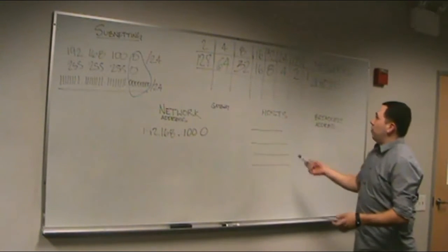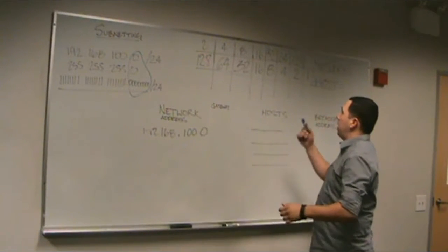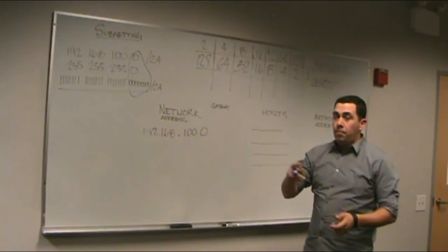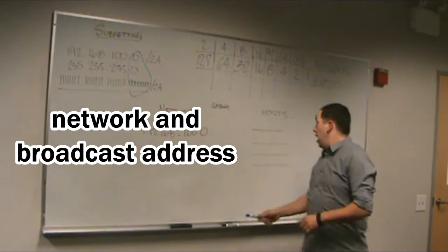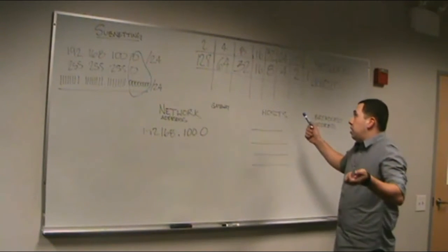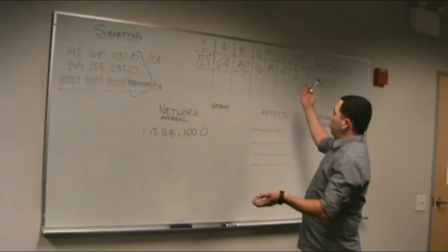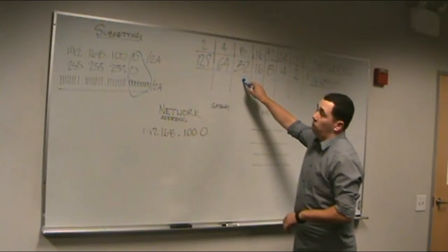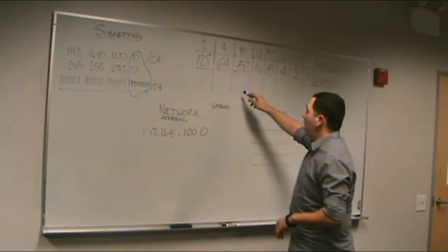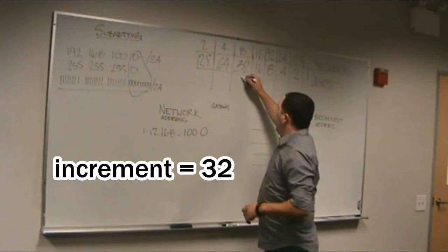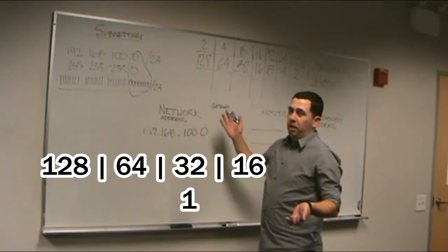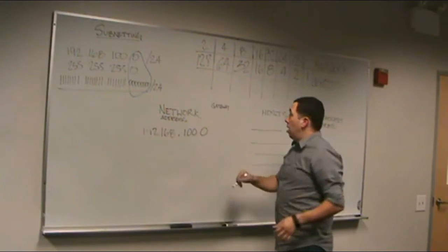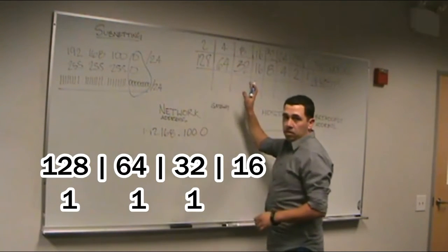So now we have to find the increment. We said 18 hosts. But don't forget, we have to add two more IP addresses — one is going to be the network address, and the other is going to be the broadcast address. So it's going to be around 20. Looking at the chart, 20 is bigger than 16, so we're going to go to 32. That means 32 is going to be our increment. So we put one bit over here — from here it's pretty easy how many bits we have to borrow to create our networks for 18 hosts. It's one, two — so total is three bits borrowed.